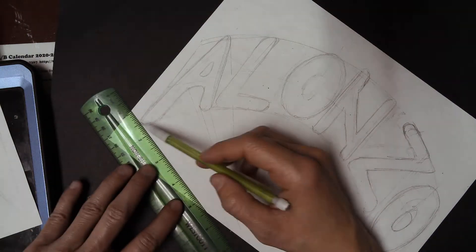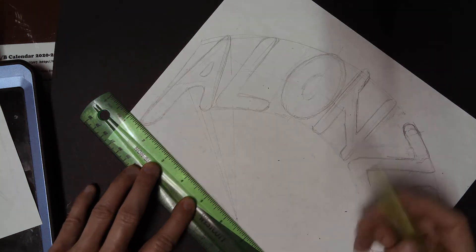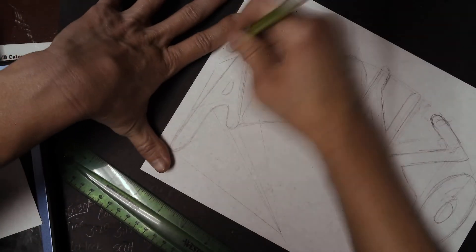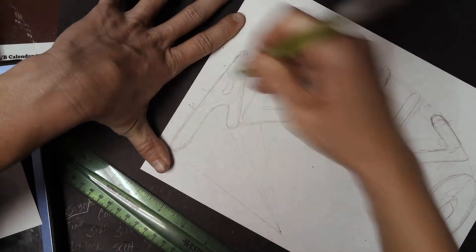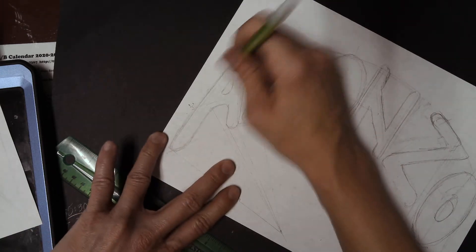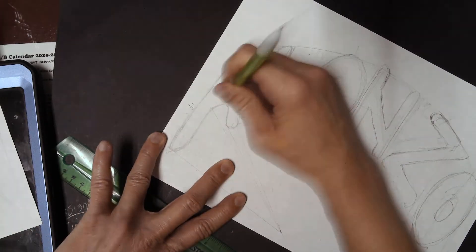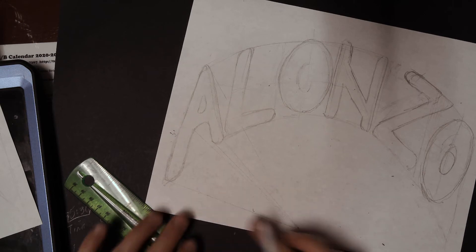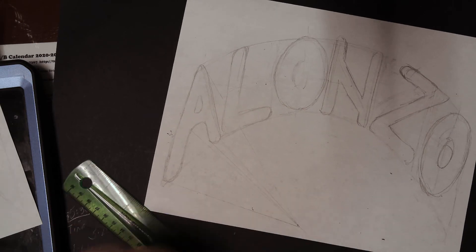So, moving forward, doing the same thing all the way around the letter. If any of these extra lines are confusing, just clean it up as you go along. White erasers are great for that.